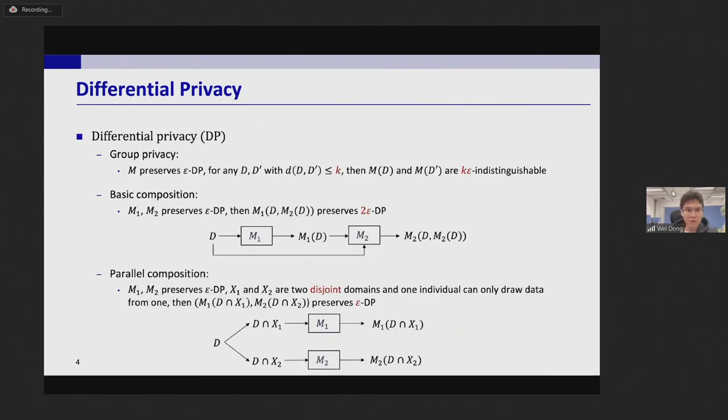And DP has several composition properties. The first one is group privacy. Here, if M preserves epsilon DP and D, D prime has distance bounded by k, then M(D) and M(D prime) are k epsilon indistinguishable.